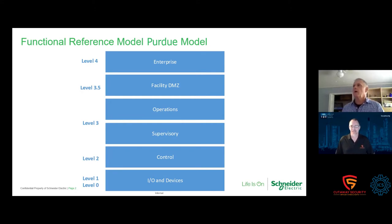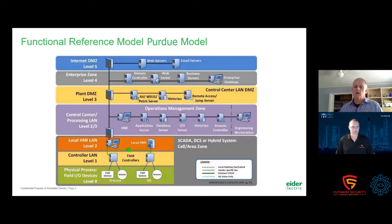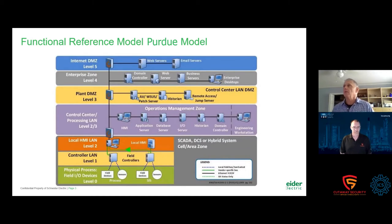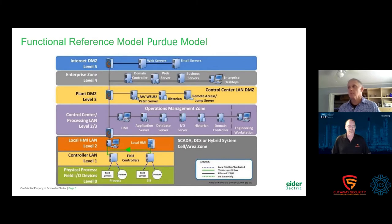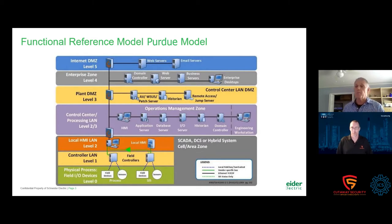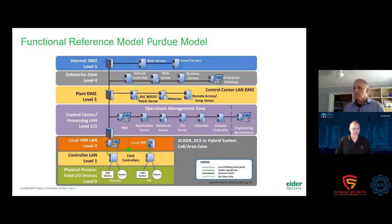When you start seeing things like this — here's an example of a Purdue with firewalls placed between the functional levels — I think you should have firewalls, especially around safety systems. Including a data diode, or as my friends at Waterfall call it a unidirectional gateway, would probably be the best thing to put in front of a safety system. But my experience is that people conceive this as a security reference architecture, and it's not — it's pure OT functionality.